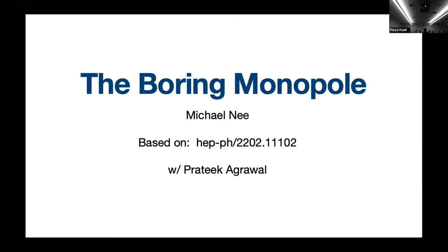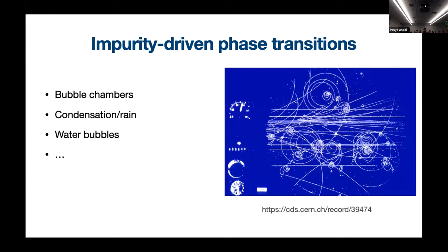The basic motivation is that phase transitions we see every day are often seeded or happen more quickly because of the presence of impurities. One nice example from particle physics is that of a bubble chamber. These experiments work by having a liquid in a supercooled phase where the preferred phase is gas, and when a particle comes into the detector it deposits energy along its path, which seeds the phase transition so bubbles form along the track of the particle.